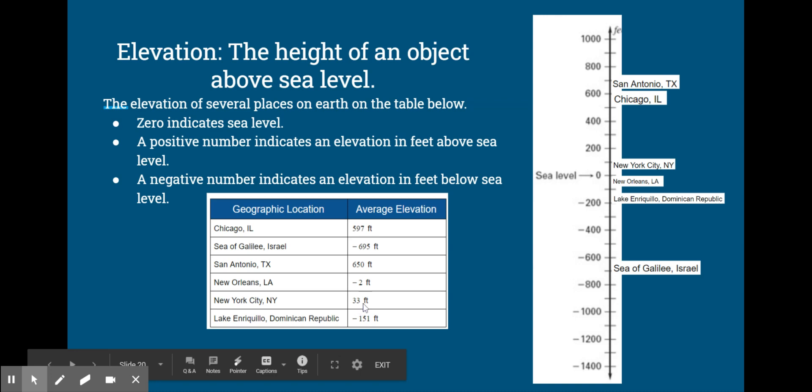Now how could we describe New York City in relation to sea level? Looking at our table, we can see that it's 33 feet above sea level. How could we describe Lake Enriqueo in the Dominican Republic in relation to sea level? Look at our table. It is 151 feet below sea level, and you can see it here on the number line—it's below sea level.